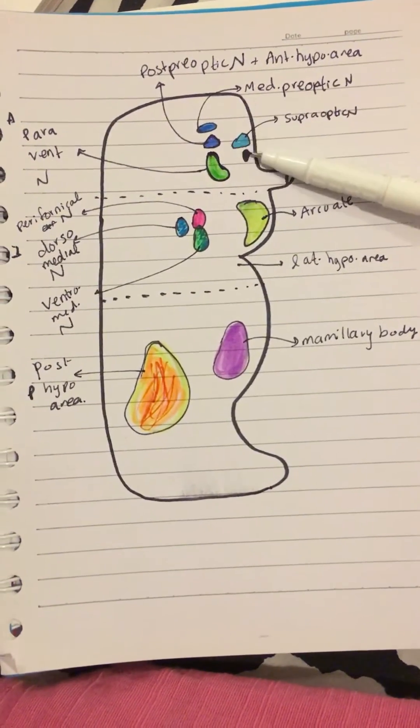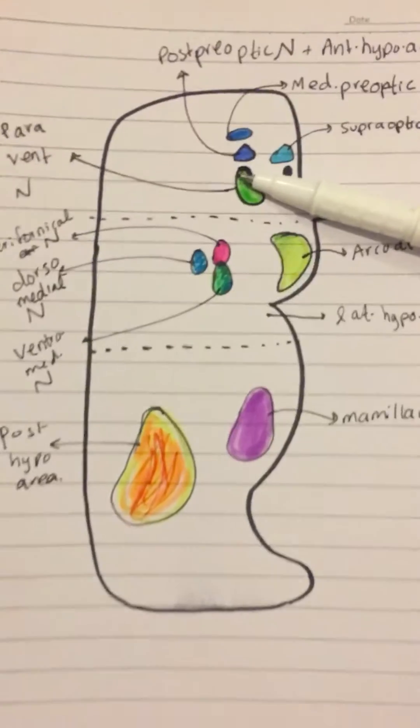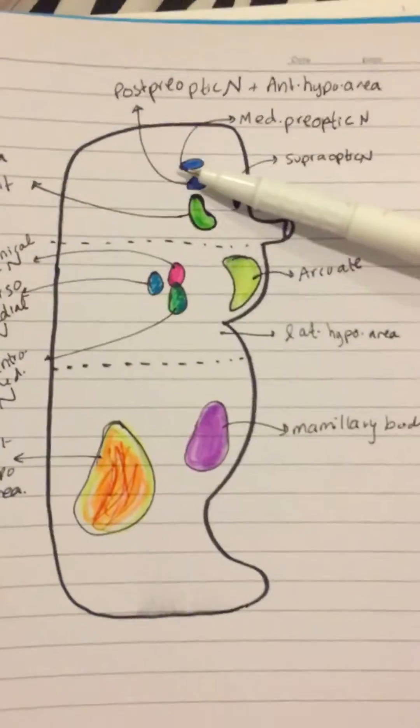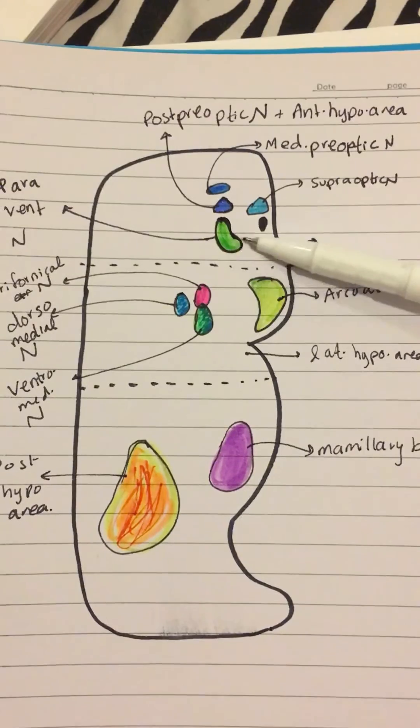In the anterior bit, you have the eye. Above the eye, you have the supra-optic nucleus. Right behind the eye, you have the posterior pre-optic nucleus and above it, you have the medial pre-optic nucleus. And right below here, we have the paraventricular nucleus.